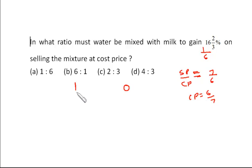1 is the cost price of pure milk, 0 is the price of water, and 6/7 is the cost price of the water-mixed milk. So 1 minus 6/7...